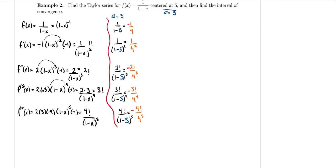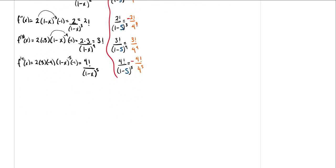For the cubic term — an odd power — the negative returns: -3!/4³. For the fourth derivative — even power — it's positive: 4!/4⁴. For the fifth — odd — the negative returns again. Now that we have our coefficients, let's write out the Taylor series. Plugging in the coefficients and simplifying, the factorials cancel just as before — the 2! cancels, the 3! cancels, the 4! cancels — giving us a clean simplified series.